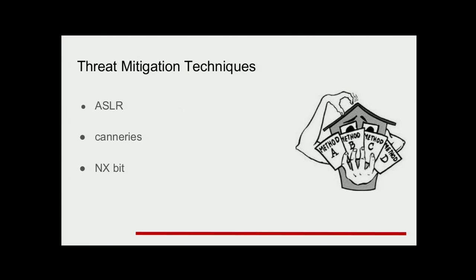We are not only fighting ambient authority — we are also trying to mitigate problems using different techniques. For example, we developed NX bits, which are special bits you can set on a memory page to say that this part of memory cannot be executable. We were trying to mitigate buffer overflow vulnerabilities this way. But when we did that, researchers came out with so-called return-oriented programming, which means looking for code gadgets in other parts of memory to build an exploit. Mitigation techniques are fine and we should have them, but they don't solve our problems — they only make it harder to exploit them.